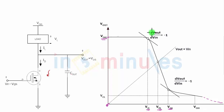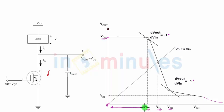These two points on the curve are the points where my slope dVout by dVin is equal to minus 1. Remember this. Now, here is the range. When my input is in the range between 0 to VIL — where O represents output, I represents input, H represents high, L represents low — it will be interpreted as a logic 0 input by my circuit.